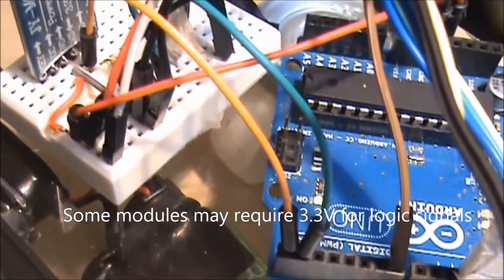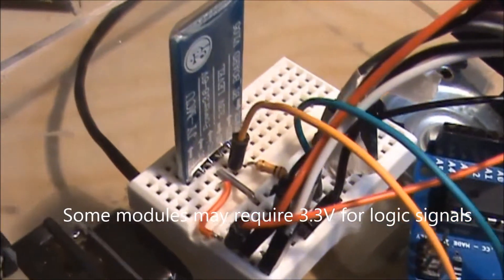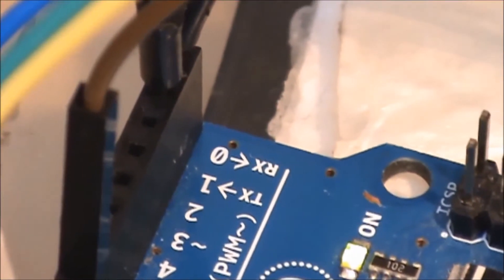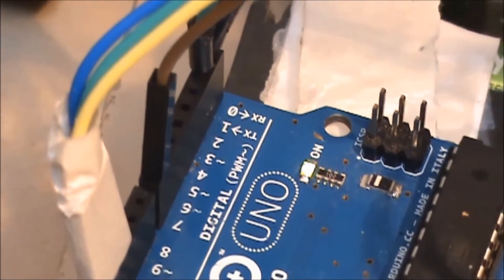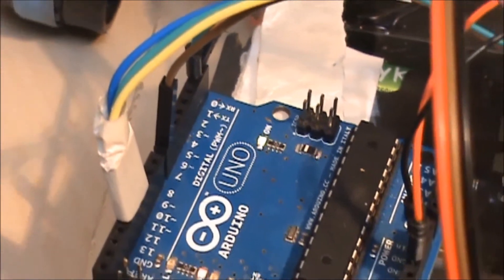Simply connect it to a 5 volt or 3.3 volt power source and then add to the serial pins on the Arduino. Note that the RX in the module connects to the TX in the Arduino. And that's it.